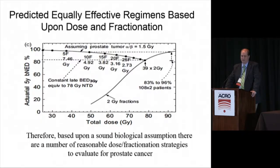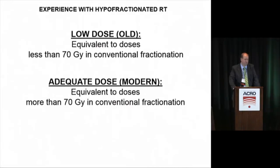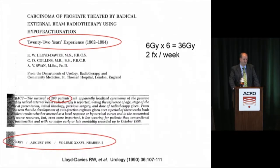Going back to Dr. Fowler's 2009 paper, he postulated iso-effective fractionation schemes going from 39 fractions of 2 gray — the MD Anderson standard — to 26 fractions, 20, 15, 10, and all the way down to 5 fractions. With an alpha-beta of 1.5 for prostate cancer, he postulated these would be isotoxic regimens that might actually lead to increased biochemical control.